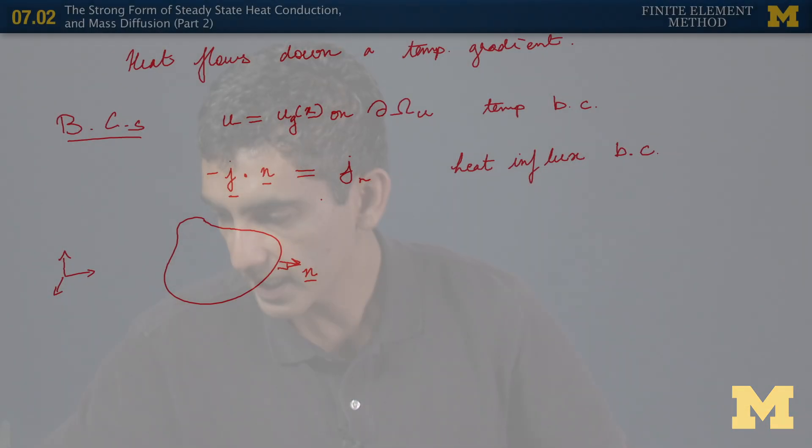Note that we're not controlling the vector itself. We cannot control the vector; the theory of PDE tells us that. In fact, physics also tells us that we cannot control the entire vector. What we can control is just the normal component of the heat flux vector here. I should also write this in coordinate notation. In coordinate notation, it is just the dot product. So it is minus J_i n_i equals j_n. This is coordinate notation.